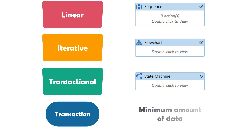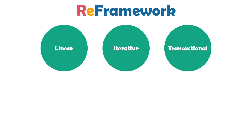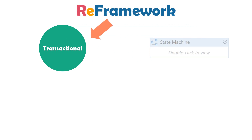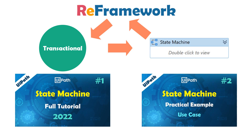A transaction represents the minimum amount of data. For example, if we want to read data from different invoices stored in a folder and enter that data into another system, each invoice can be seen as a transaction because we execute the same steps for each one. Now, going back to re-framework: it is used to handle any kind of business processes, but we mostly use it for transactional processes. Since we use state machine to implement transactional processes, re-framework is based on a state machine. If you don't know what state machine is, check the two videos about it — links are in the video description.